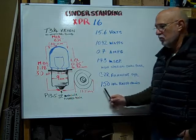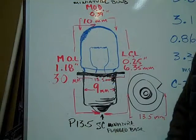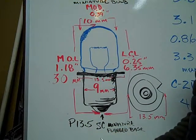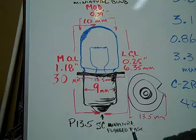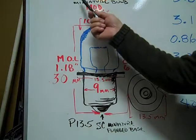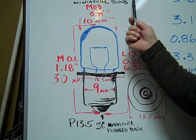The average rated hours are 150 hours. The P13.5 single contact miniature flanged base bulb is a T3.25 Xenon.